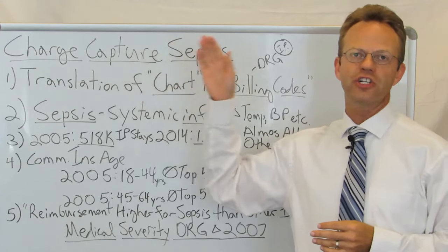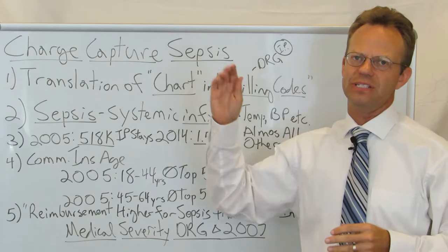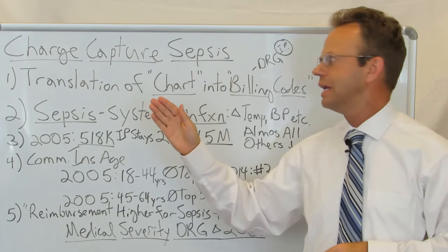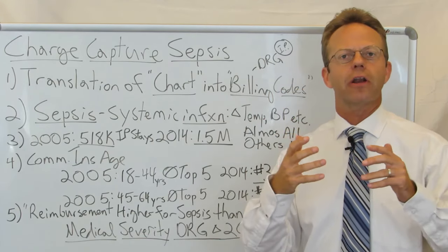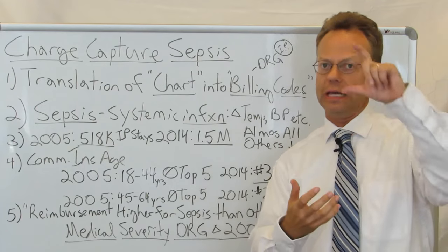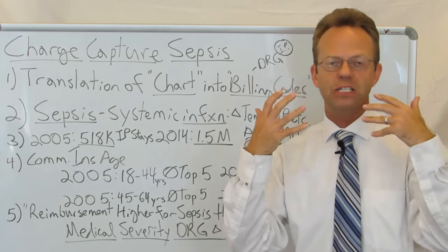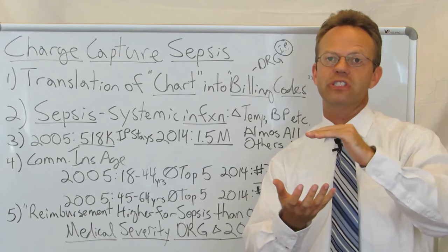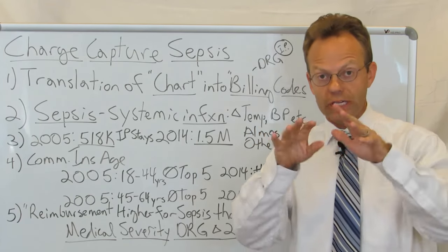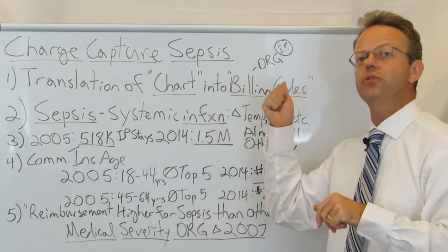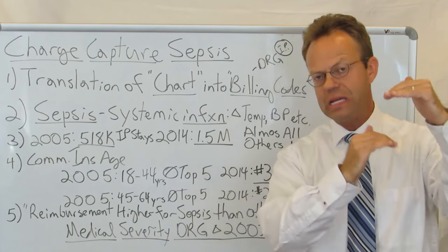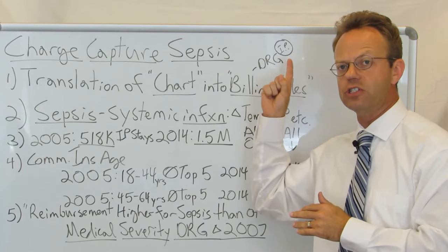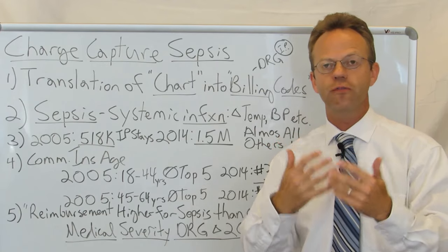Today we're going to be discussing charge capture and the story of sepsis. Charge capture is the translation of the chart or medical record into billing codes. Especially for inpatient stays, there's a paper chart that people still write in — doctors write daily notes by hand. When the stay is complete, it goes to the medical records department where coders read what the doctor has written and translate it into billing codes. There are very specific rules about what words must be in the chart in order to use certain billing codes, which then roll up into what are called diagnosis-related groups or DRGs.